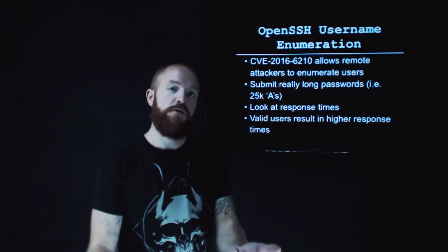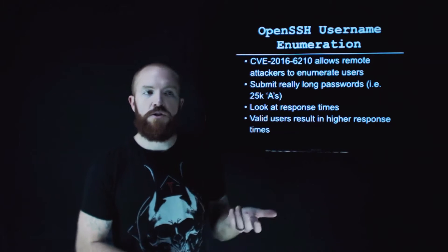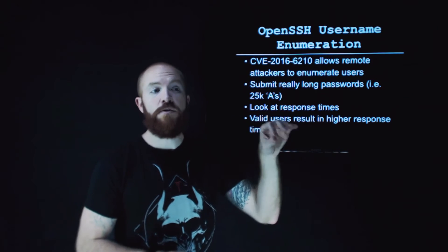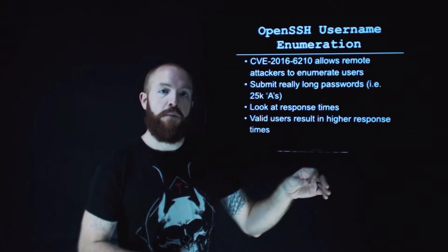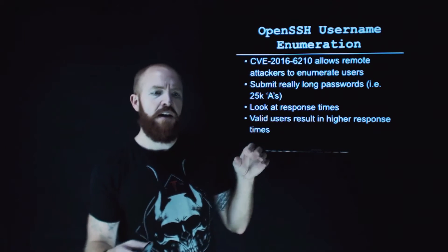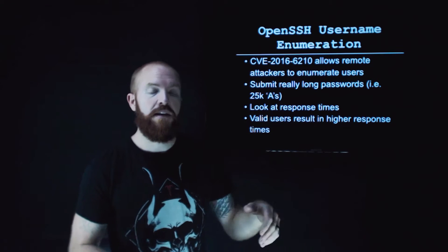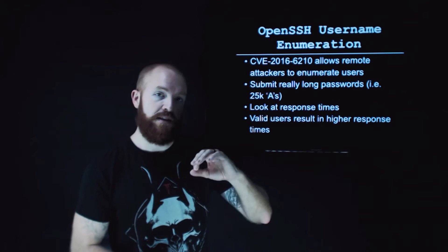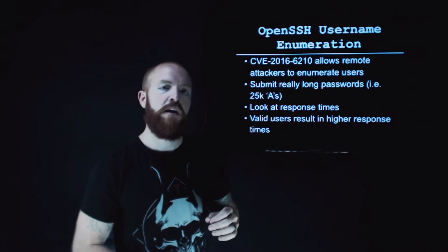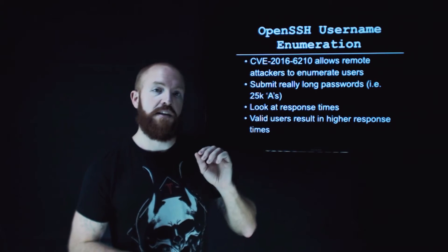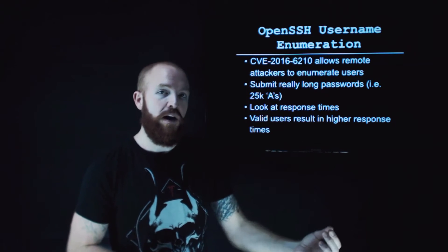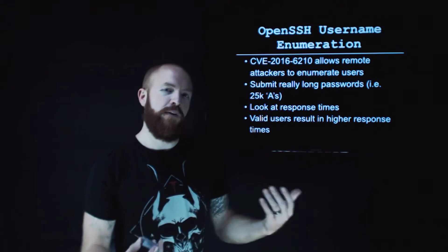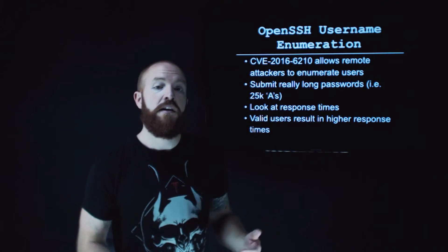Traditionally, when you look for username enumeration vulnerabilities in web apps, you try inputting an email address and see if the server responds with either 'that username is already in use' or 'that username is invalid.' We typically recommend something like 'the username and password are invalid in combination,' because then it's not specifically clear whether it's the username that was valid or invalid. But what most people don't understand is that if you look at the response times for web applications as well, you can do the same thing. So while this is a vulnerability in OpenSSH, it's something we find pretty often in other applications as well.